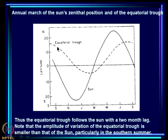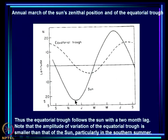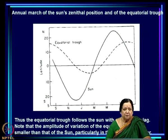Note that the amplitude of the response is smaller than the heating itself — the latitudinal extent of the equatorial trough variation with season is smaller than the latitudinal extent of variation of the sun. Secondly, there is a lag, which is expected because the earth-atmosphere system does not respond instantaneously. The equatorial trough reaches its southernmost position about two months after the sun has reached its southernmost position, primarily because sea surface temperature takes time to respond — the ocean is somewhat sluggish.